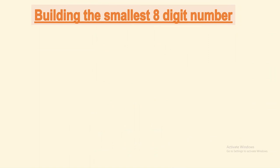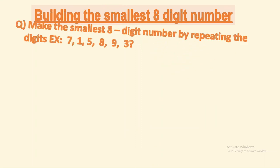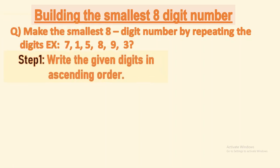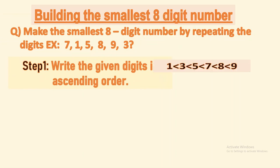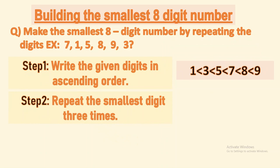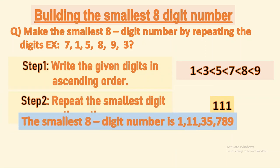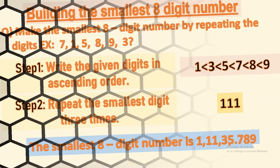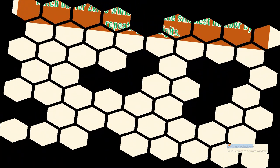Now let's build the smallest eight digit number. Again we have six digits and need an eight digit number, so we repeat. Step one: write the digits in ascending order — 1, 3, 5, 7, 8, 9. Then repeat 1, the smallest digit. The eight digit number is 1 crore 11 lakh 35,789.